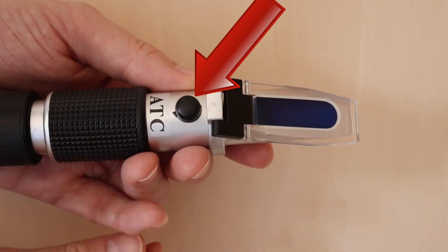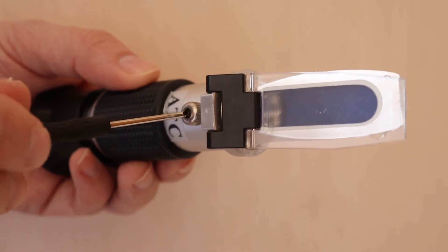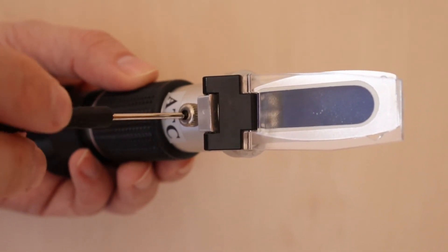So remove this black cap to reveal a screw. Now grab the screwdriver and turn the screw clockwise or anti-clockwise until the blue and white meet at the waterline.